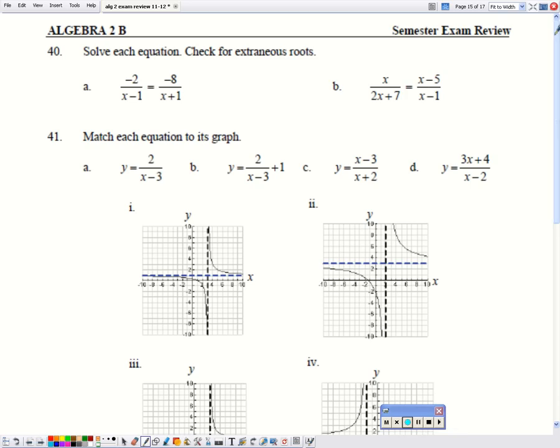Number 40. Solve each equation. Check for extraneous roots. Both of these are just proportions, and all I'm going to do is cross-multiply. So I'm going to do negative 2 times x plus 1, and that's going to give me negative 2x minus 2. Equals, and now I'm going to do negative 8 times x minus 1, and that's going to give me negative 8x plus 8. I have variables on both sides, so I'm going to add 8x. And that's going to give me 6x minus 2 equals 8. I'm going to add 2, and that gives me 6x equals 10. I'm going to divide by 6. I'm going to get x equals, either you can write it as 5 thirds, or you can write it as 0.6. So, are they extraneous? Well, that means that if I put my 0.6 into the denominator, I would have 0. 0.6 minus 1 is okay, and 0.6 plus 1 is okay.